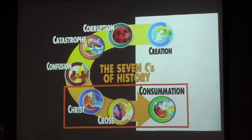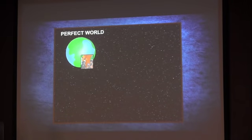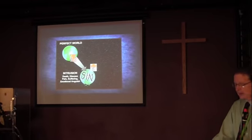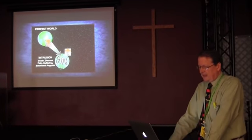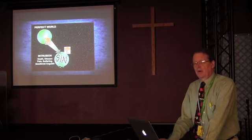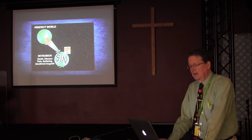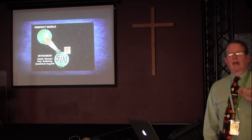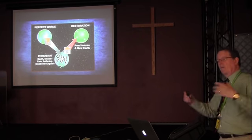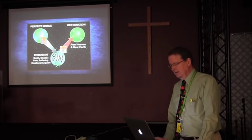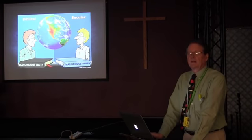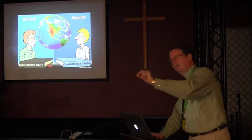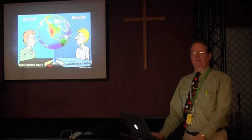Then the last three C's: Christ, cross, and consummation. We start with a perfect world with no death, disease, or sin. Man rebels against God, brings all of that evil into the world. Jesus came to solve the problem of sin. But he only started to solve it, because he's coming again and he's going to create a new heavens and a new earth where there won't be any more of all this evil that we see. So two different ways of looking at the world and interpreting the evidence: the eyewitness testimony of the Creator, or the rejection of the eyewitness testimony of the Creator.